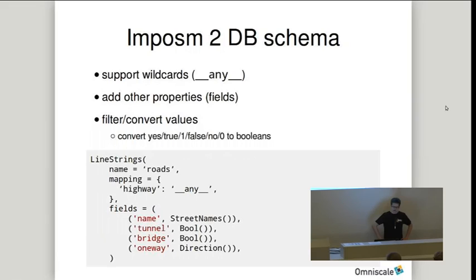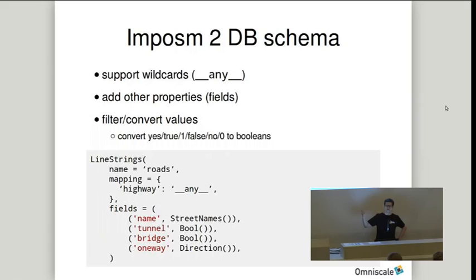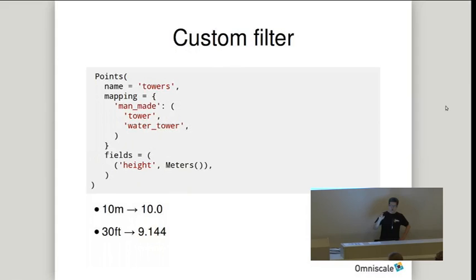Impossum also allows you to use filters and converters — for example, to store boolean values in the database. You can define a tunnel with yes, true, one, false, no, or zero, and unify that. This simplifies the rendering process when you want to style maps. You can also write custom converters. In this example, we have a table with towers where we want to store the height in meters, and we can write our own converter to convert heights in feet to meters.